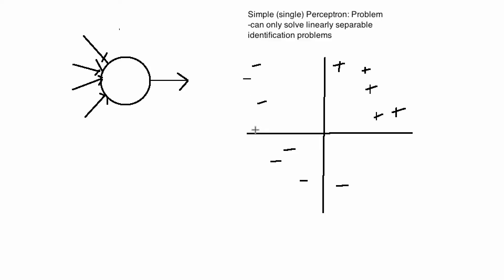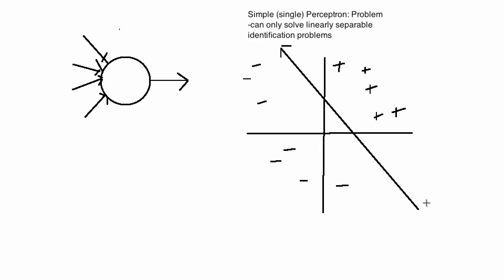Looking at a simple two-dimensional problem right here, we can see I've got these positive examples labeled with positive signs, and over here I've got these negative signs. So we can see that this is linearly separable — there are lots of lines I could draw that would separate these into positive and negative. There would be such a line right there, and a perceptron would be completely capable of learning this concept.